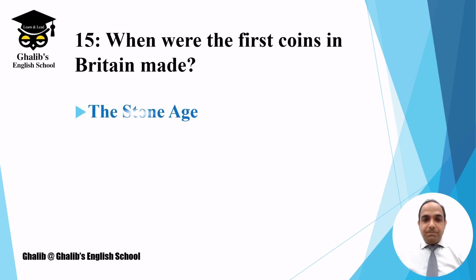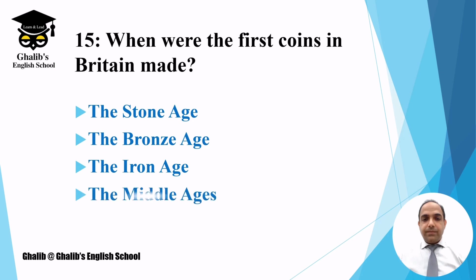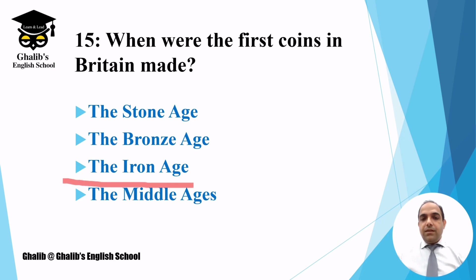Question number fifteen: when were the first coins in Britain made? The options are the Stone Age, Bronze Age, Iron Age, or the Middle Ages. The answer is the Iron Age.